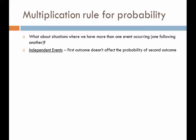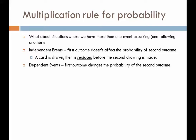We see this again with flipping coins and rolling dice. Each event carries its own probability, and its outcome does not affect the probability of the events that follow it. If we draw a card from a deck but then replace that card before the second drawing is made, we haven't changed the sample space and therefore haven't changed the probability based on the first occurrence. If two events are dependent, then the first outcome will change the probability of the second outcome.